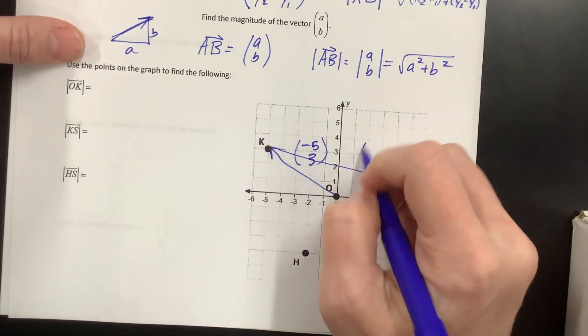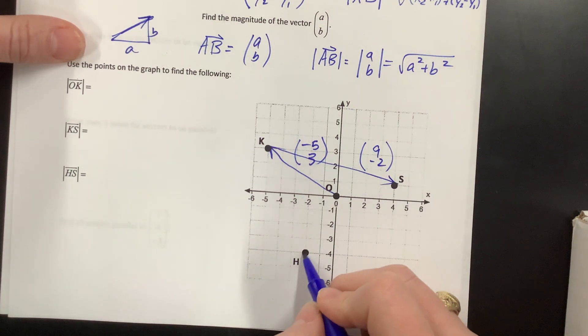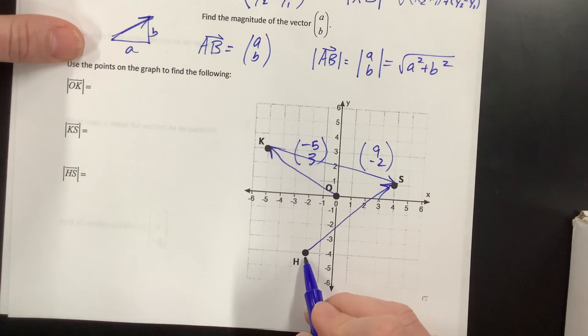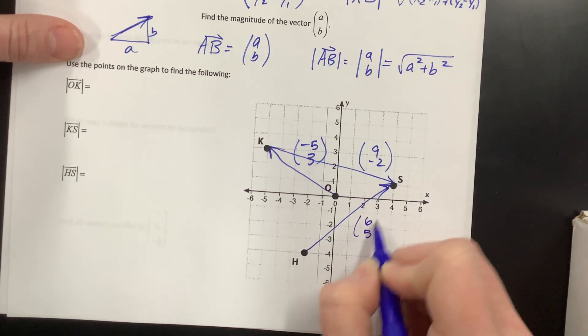I think that vector was 9, negative 2. And then HS was 6, 5.